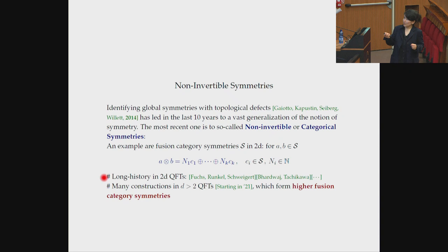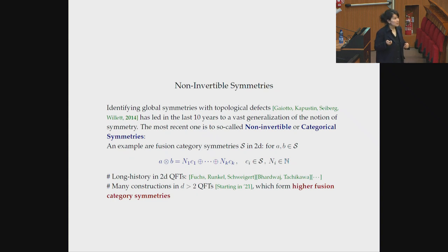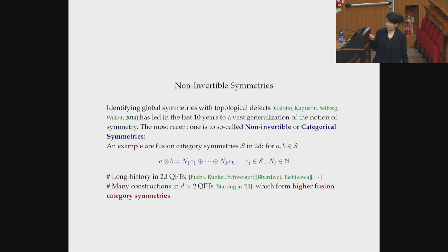Roughly, the structure is: you compose two symmetry generators, and what you get is not just another symmetry generator as in a group composition law, but you get a sum of generators, usually with non-negative integer multiplicities. There's a long history in two-dimensional quantum field theories about fusion category symmetries, but what's been really exciting starting in 2021 is that such symmetries can also exist in higher dimensions, and in fact their symmetries form higher fusion categories.